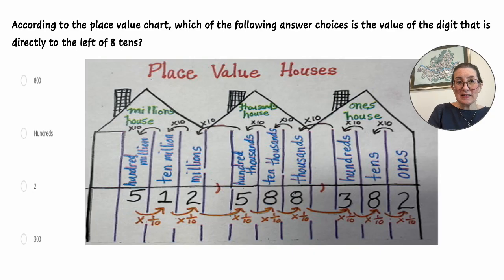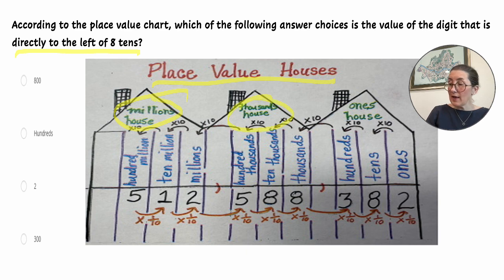According to the place value chart, which of the following answer choices is the value of the digit that is directly to the left of 8 tens? Let's look first at how to read the place value houses. So we've got the millions house, the thousands house, and the ones house. So we can see that the numbers get larger as we go to the left, and smaller as we go to the right.